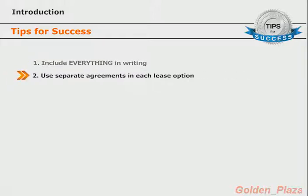Our second tip is to make sure and use separate agreements with each lease option deal. The two agreements you should use are a lease agreement that details the conditions of the lease, and an option agreement that details the conditions of the option. You will learn later in the lesson why it is so important to use these separate agreements.